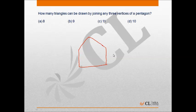So the total number of triangles that can be formed by joining any three vertices of any pentagon will be 5C3, which is equal to 5 into 4 into 3 upon 3 into 2 into 1, which is 10. So the required answer is B.